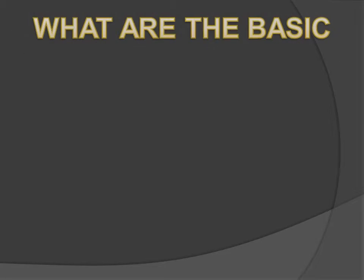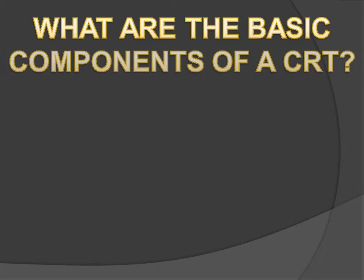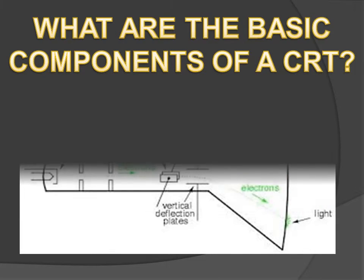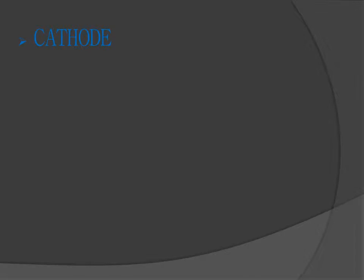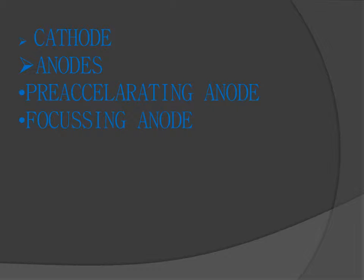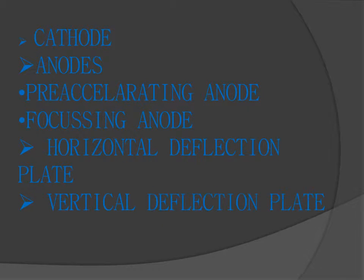What are the basic components of a CRT? Cathode, anodes, pre-accelerating anode, focusing anode, horizontal deflection plate, vertical deflection plate, and fluorescent screen.